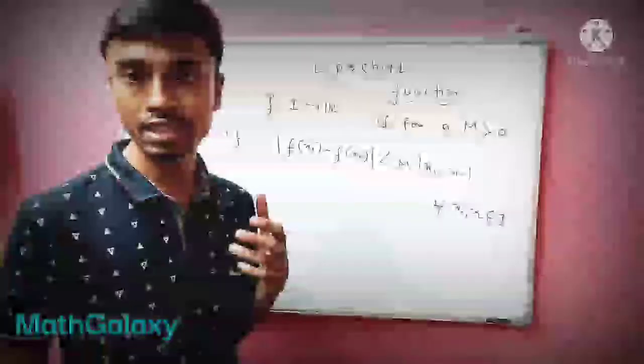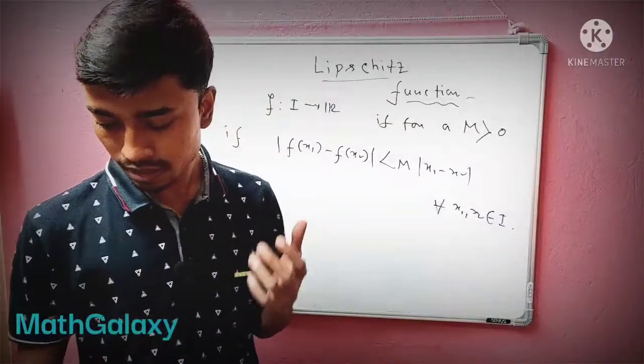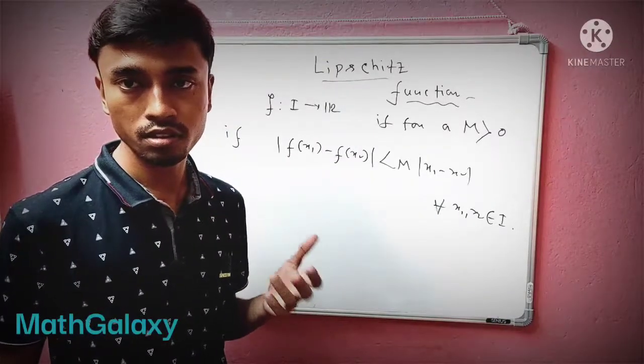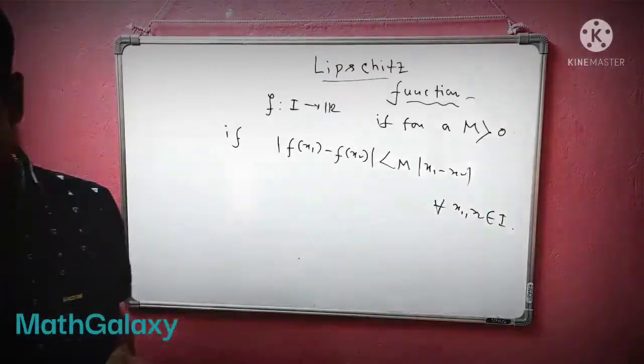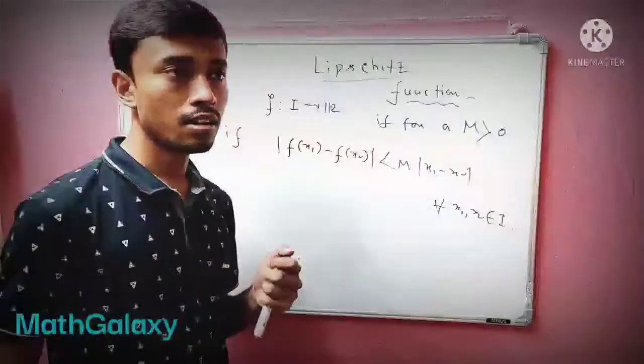It is basically called a uniformly continuous function. You know what is uniformly continuous or sometimes called the UC function - it is that kind of function.